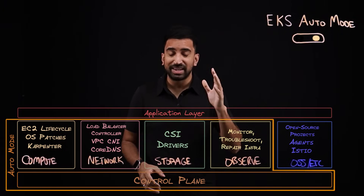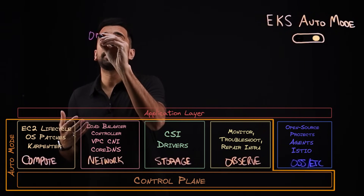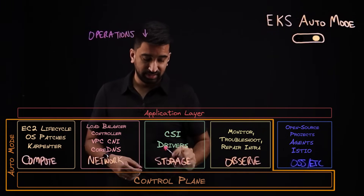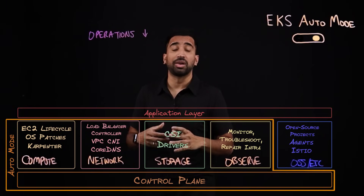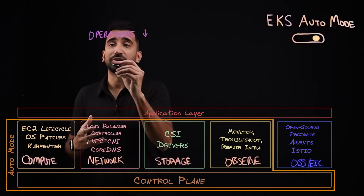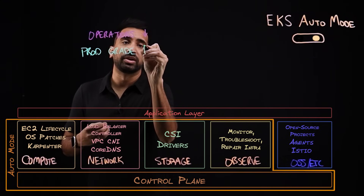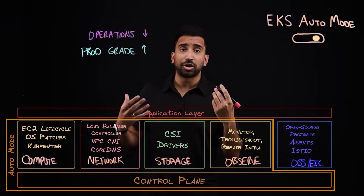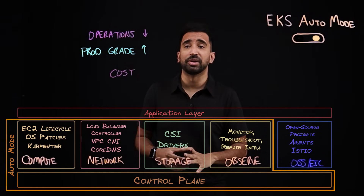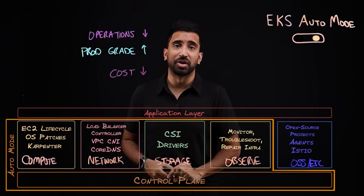Let's summarize. With EKS Auto Mode, we're improving your overall agility — essentially helping you reduce the amount of time you spend on operations. Next, we're improving your overall security posture, your resiliency, your application's availability and performance — let's call this production grade. And lastly, when we talk about cost and optimizing costs, with Karpenter as well as the host of other capabilities, the goal is that we continually optimize your costs, bringing down your overall spend.